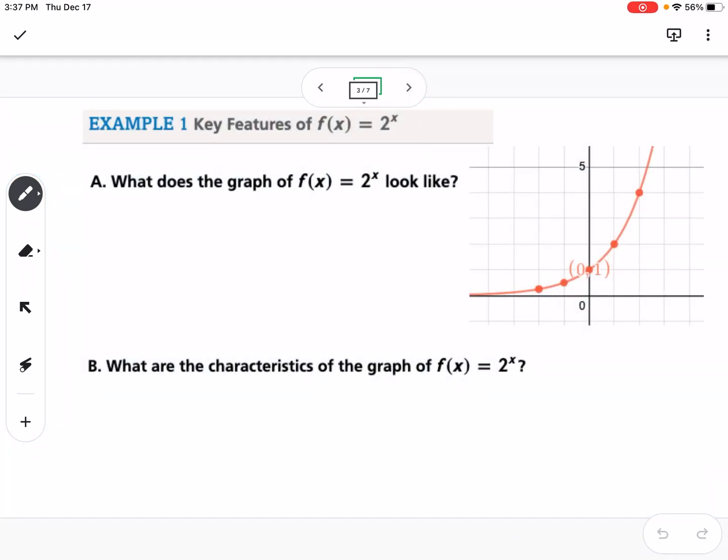So the first one is the key features of f(x) = 2^x. What does the graph of f(x) = 2^x look like? We can always make a table. So we can make an x, f(x) table, and I always like to plug in some negative numbers and some positive numbers. So if we plug in 2 to the negative 2, you're going to get 1 fourth or 0.25. 2 to the negative 1 is going to give you a half or 0.5. 2 to the 0 power is 1.